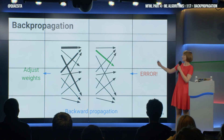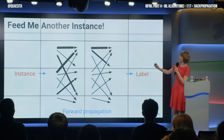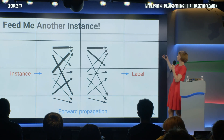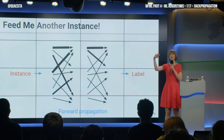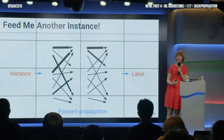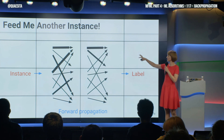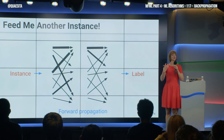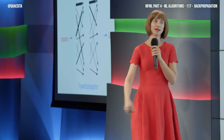Then the adjustment is made and now you take your next instance, forward propagate it through, get the label, get the mismatch, back and forth, like sewing with a needle. And as those weights adjust, the solution becomes more and more of a good sensible recipe for you. That's the simplest implementation. Now there are more interesting ones where you can train on many instances at once.